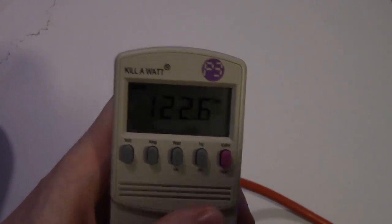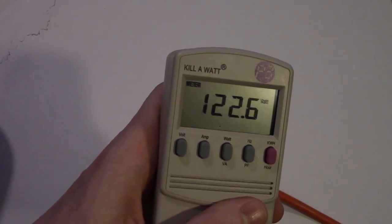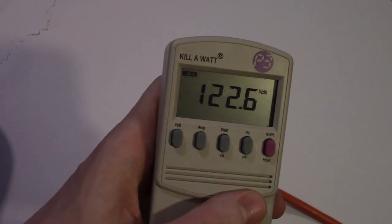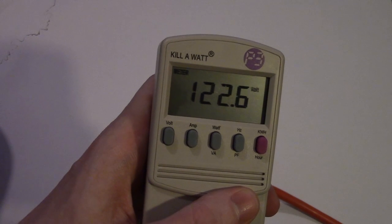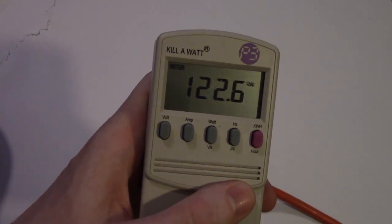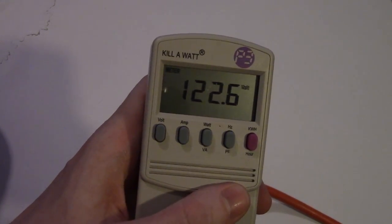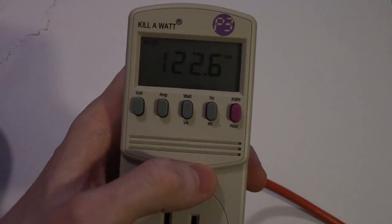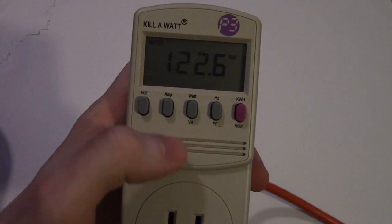The very first display that comes up on the screen is the voltage. According to this, it says there's 122.6 volts, which is about right being that there's 120 volts here in the US. The volt button is right there. If you want to look at your voltage, you hit that one.